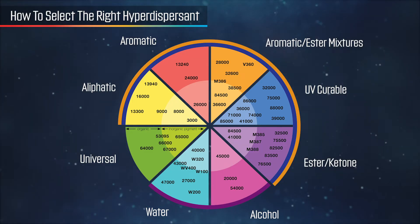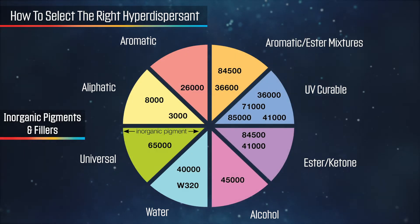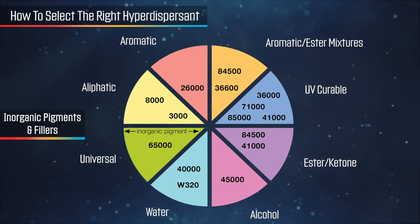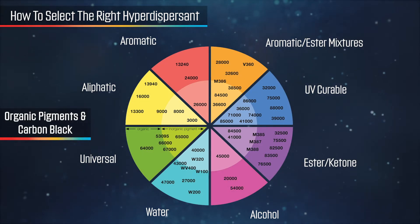The dispersant needs to anchor strongly onto the pigment or filler, and different pigments can have very different surface chemistry. Inorganic pigments and fillers disperse best with acidic or anionic anchor groups. Organic pigments and carbon black disperse best with basic or cationic anchor groups.